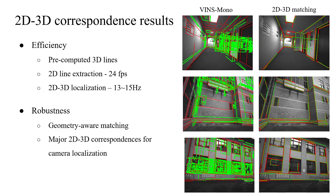We analyze the 2D-3D correspondence results. The 2D-3D line alignment using our method is much better than the odometry. In our framework, the 2D-3D line matching is very efficient since 3D line detection is offline and 2D line detection runs almost in real-time. The final 2D-3D localization framework can run at 30 to 50 Hz. This geometric line matching can overcome the modality gap across the 2D and 3D domain and greatly help with camera localization.